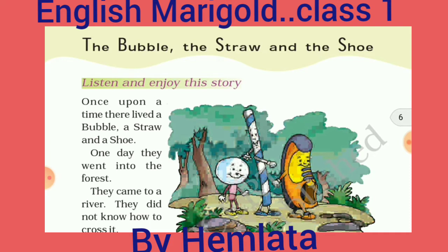We will explain you about the bubble, the straw, and the shoe. A bubble is a liquid — which we call a 'gubara.' A straw is what we use with cold drinks. And a shoe, as you can see in the picture. This is a story based on three friends who lived in a village: a bubble, a straw, and a shoe.